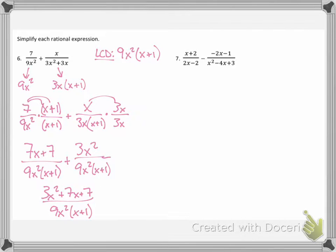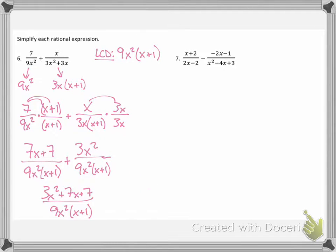Now we want to see if we can simplify anything further. The denominator is already factored apart, so we look at the new numerator and ask if we can factor it. We have a trinomial with an a value greater than 1 — so we need what adds to 7 and multiplies to a times c, which is 3 times 7, equals 21. You can think all day long about what adds to 7 and multiplies to 21 — nothing does. Sometimes when you combine these expressions, you don't have anything more that can factor, and that's okay. If that's the case, leave it alone and box it off. So there is my final answer for number 6.